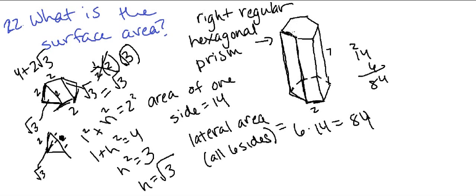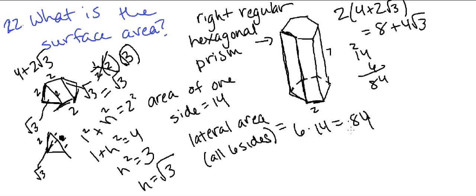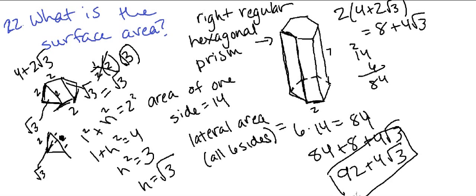There's a hexagon on the top and a hexagon on the bottom, so we have 2 times (4 + 2√3), which equals 8 + 4√3. Adding this to the lateral area of 84, we get 84 + 8 + 4√3, which gives us 92 + 4√3. That is your surface area. I'm a math tutor and my email is in the description if you're interested in tutoring sessions.